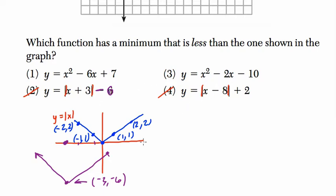Same thing is true here. This time, we go to the right because we're subtracting inside the absolute value, eight places like over here and then up two. So like this time, the minimum point is eight and the height of that point is two. That minimum is two, not less than negative seven. So those choices are out.